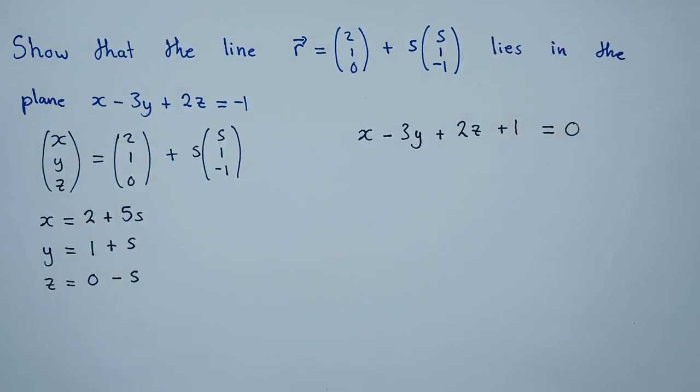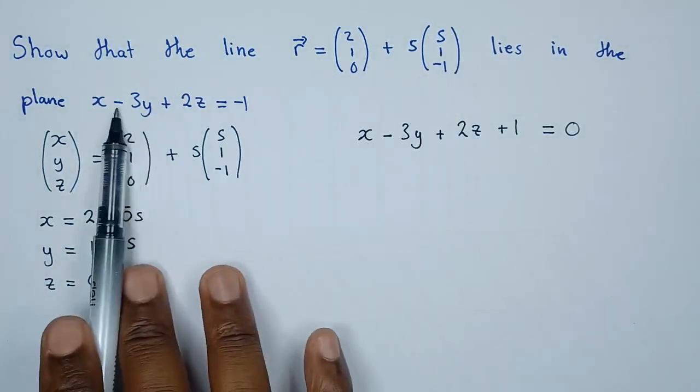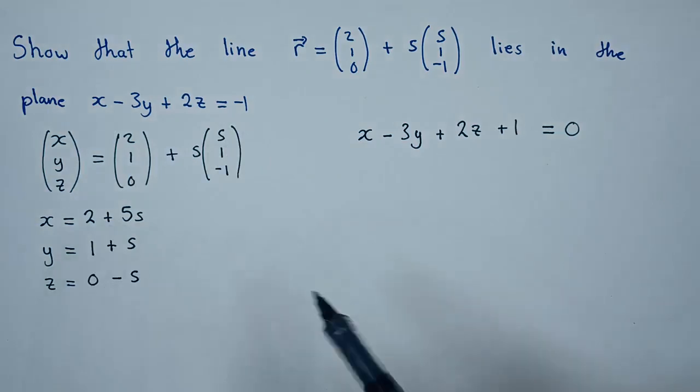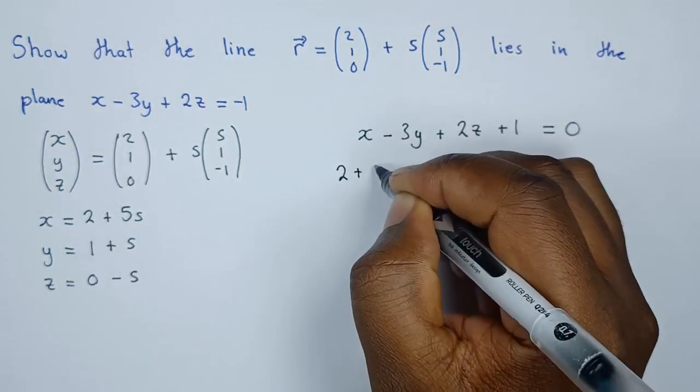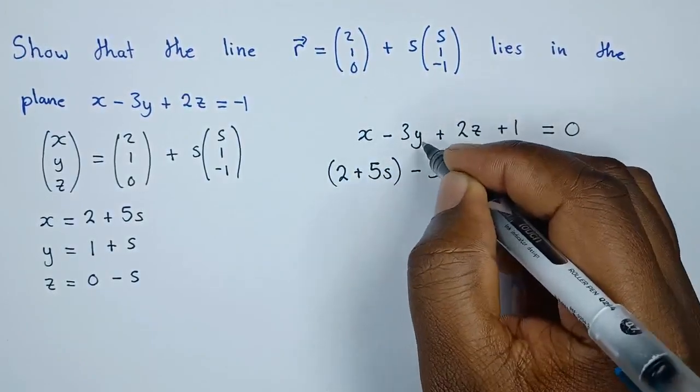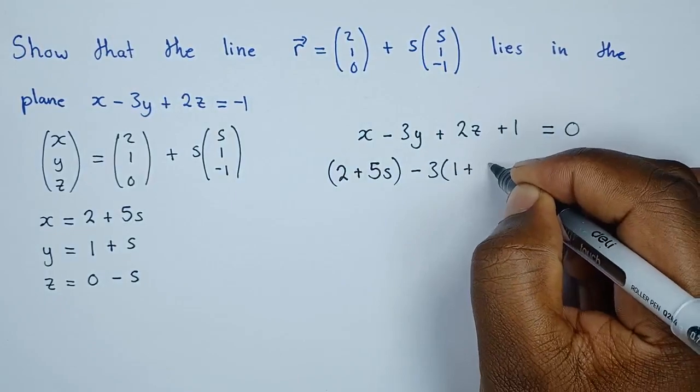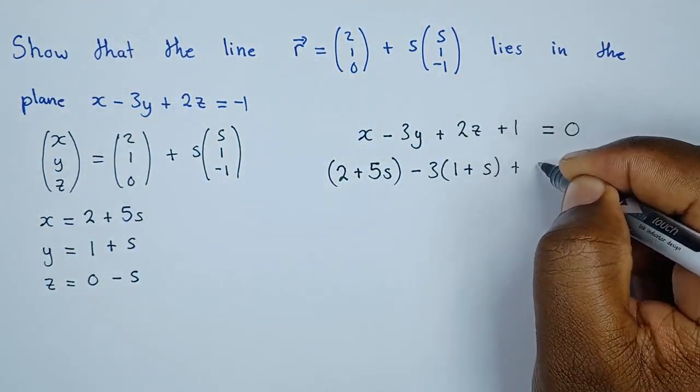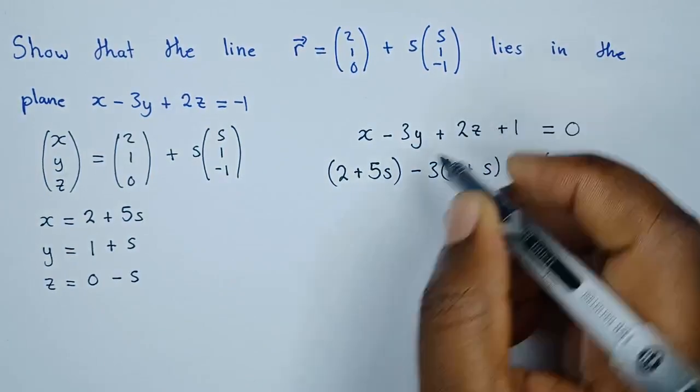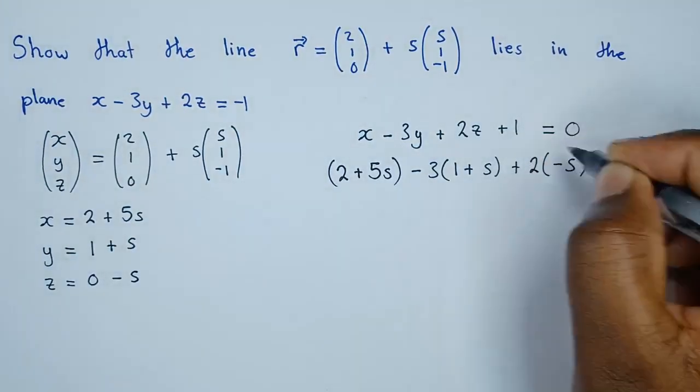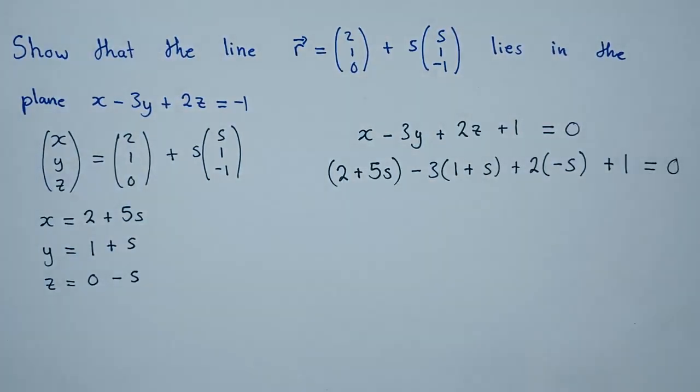We have to show that this equals zero, which would prove the line lies in the plane. Where there's x, we replace it with 2 plus 5s. Where there's y, we replace it with 1 plus s. Where there's z, we replace it with negative s.